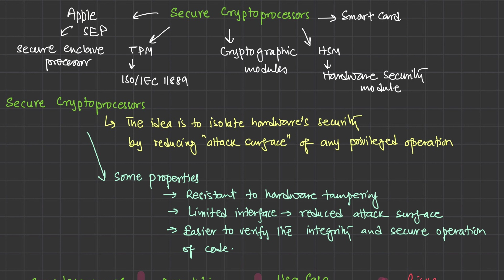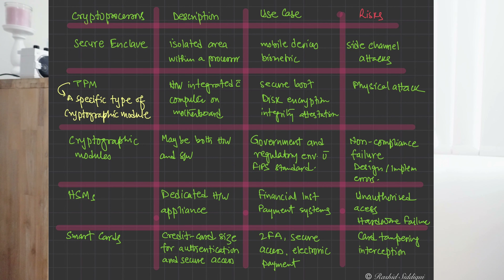The important thing from an exam perspective is knowing the risks associated with each secure crypto processor. A table covering this is very important: you have secure enclave, TPM, cryptographic modules, HSMs, and smart cards, each with a description, use case, and risk. A secure enclave isolates an area within a processor for cryptographic operations — most prevalent in mobile devices and biometric authentication — and its risk is side-channel attacks. TPM (trusted platform module) is a specific type of cryptographic module, always implemented as hardware integrated on the computer's motherboard.